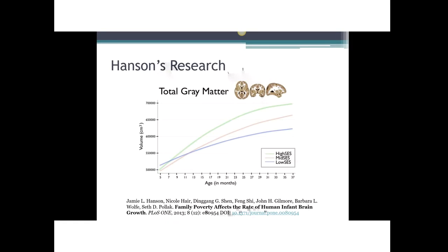This chart is from a recently published study by Jamie Hansen at the University of Wisconsin at Madison. The study used MRIs to measure gray matter in the brains of children, with socioeconomic status measured as total family income ranging from 4% to 400% of the federal poverty level. Researchers found more gray matter by volume in the brains of children from higher SES and less in those from lower SES. The same was true of white matter — so higher SES correlates with more neuronal connections and more efficient connections.